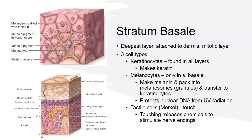Let's begin with the deepest layer of the epidermis, the stratum basale, also known as the stratum germinativum or basal layer — germinativum means it germinates, makes something new. This is a single layer of cells that looks cuboidal, though we still technically consider them squamous. They are tightly packed and attached to the basement membrane that separates the epidermis from the dermis. There are three major cell types found here; keratinocytes are the most abundant throughout all layers.